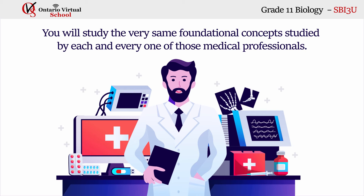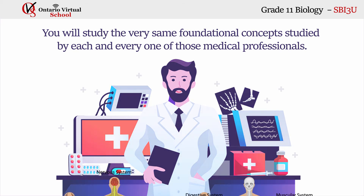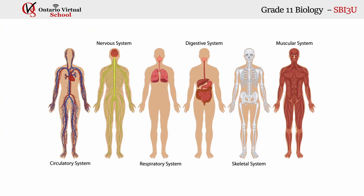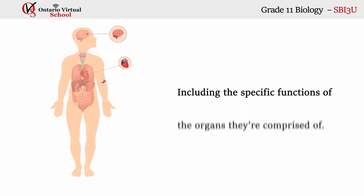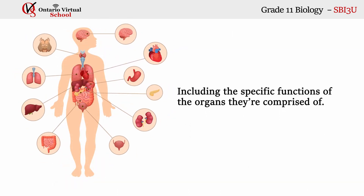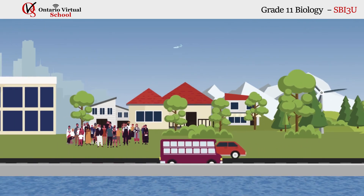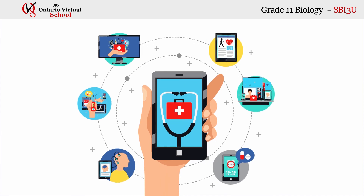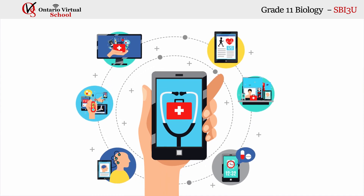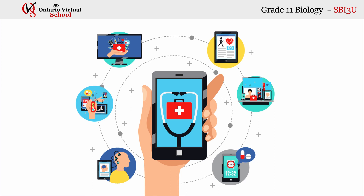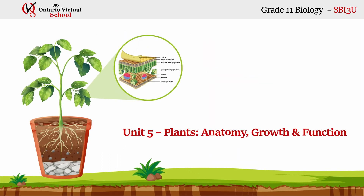You will learn about the interactions between our body systems, including the specific functions of the organs they're comprised of. We will also discuss how society's changing needs dictate in part the development and use of technology in the maintenance of everyday human health. Unit 5: Plants Anatomy, Growth and Function.